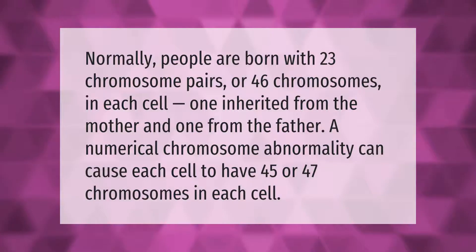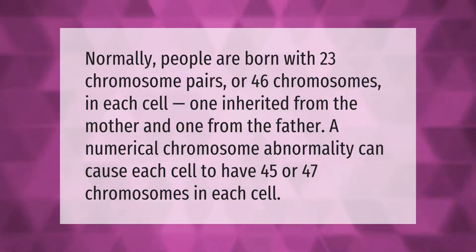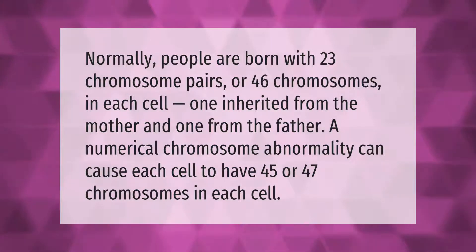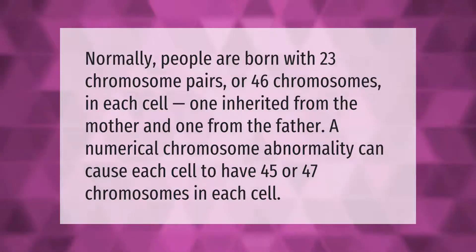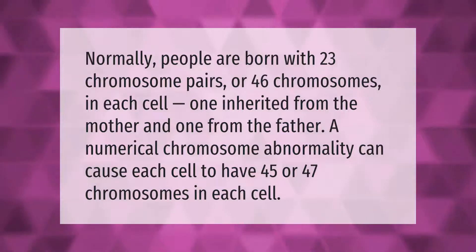Normally, people are born with 23 chromosome pairs, or 46 chromosomes in each cell — one inherited from the mother and one from the father. A numerical chromosome abnormality can cause each cell to have 45 or 47 chromosomes instead.